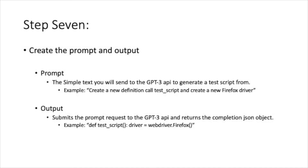Now that we have our example set up and added to GPT-3, we can now create our prompt and output. The prompt is the simple text you will send to the GPT-3 API to generate a test script from. For example, we could send a prompt stating: create a new definition called test script and create a new Firefox driver. From that prompt, the output may return something similar to the code shown below. The output property submits the prompt request to the GPT-3 API and returns the completion JSON object, based on the prompt sent.